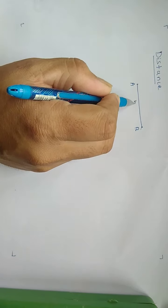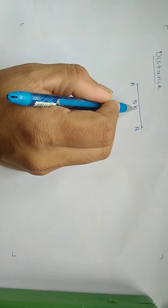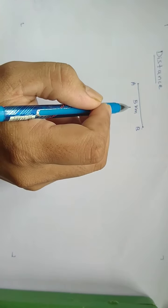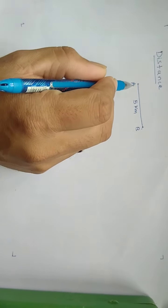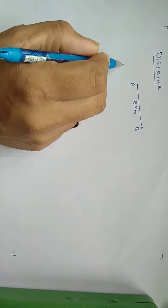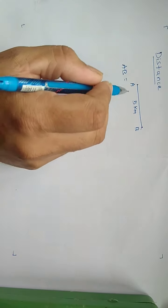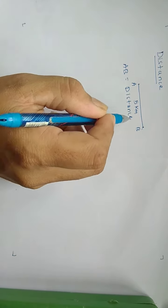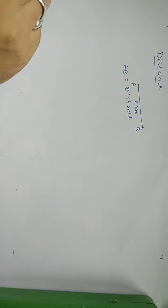It is 5 km from A to B. A person covers distance from A to B, 5 km. AB here is your distance. This is called the distance.